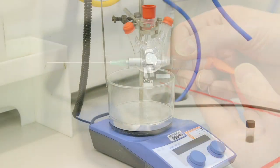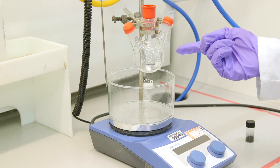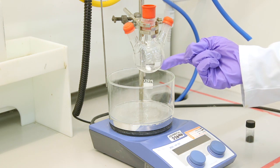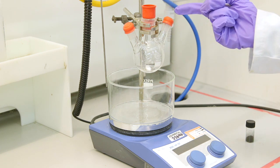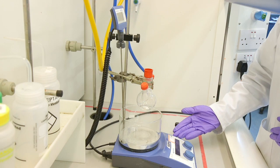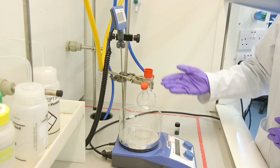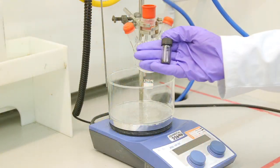For the reaction setup we are going to need our three necked round bottom flask with a magnetic stirrer inside and three rubber seals on each neck to seal. Our secondary container, magnetic stirrer hot plate, clamp and pre-weighed palladium.